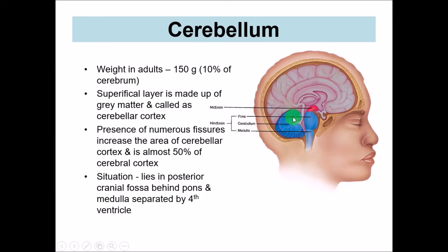The cerebellum is almost one-tenth of the weight of the brain — if the brain is almost 1.5 kilos, the cerebellum will be just 150 grams. But the surface area is much larger, almost half that of the cerebral hemisphere, because of the huge number of depressions and elevations. The depressions are part of the numerous fissures present here, which give the surface a much bigger area.